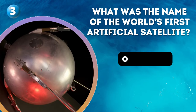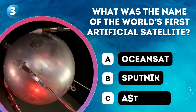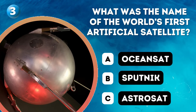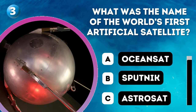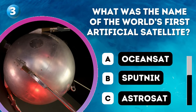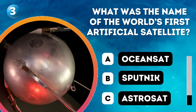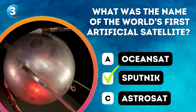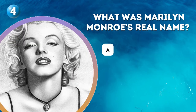Question 3. What was the name of the world's first artificial satellite? A. OceanSat, B. Sputnik, C. Astrosat. Answer: Sputnik.